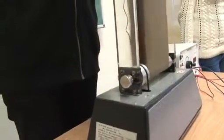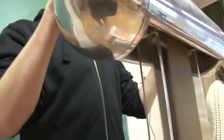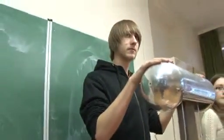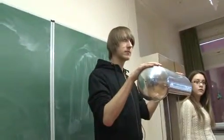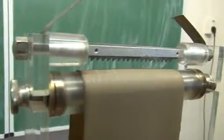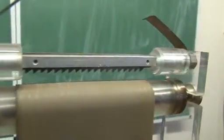A motor egy végtelen gumiszalagot mozgat a felső és az alsó rész között. Ezeket egymástól plexi lemezekkel szigetelik el. Az alsó görgőt elhagyó gumiszalag pozitív töltésű, és ezt a töltést a felső gömbnek a csúcshatás miatt egy fésűsoron keresztül adja át.